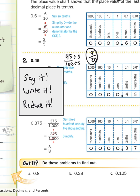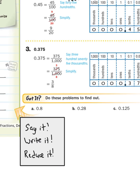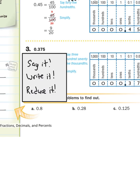Last one. I have this decimal here. Say it, write it, reduce it. When I say it: three hundred seventy-five thousandths. Now I'm going to write that: three hundred seventy-five thousandths. And I'm going to reduce it. This is one you probably definitely want to reduce on a calculator. Type in three hundred seventy-five, fraction button, a thousand, and it will reduce to three-eighths, which is your final answer.